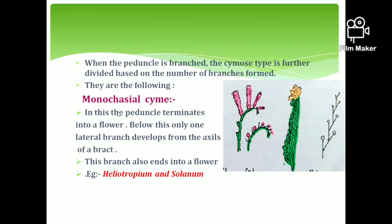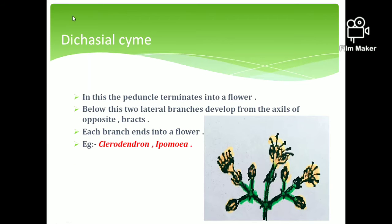The next type is monochasial cyme. Here the main axis terminates in a flower, and only one lateral branch arises from the axis. That lateral branch also terminates in a flower, and this pattern continues, forming a one-sided branching system. This type of inflorescence is seen in plants like Heliotropium and Solanum.